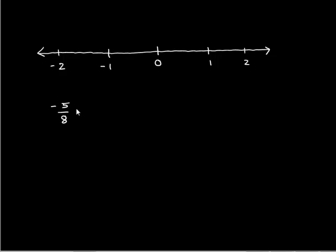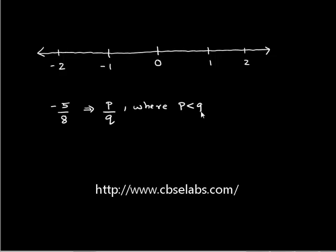That is we have 5 less than 8. We have to compare the magnitudes of the numerator and denominator. In order to represent negative 5 upon 8 on the number line we have to divide the unit length between 0 and minus 1 into 8 equal parts because the denominator we have is 8.